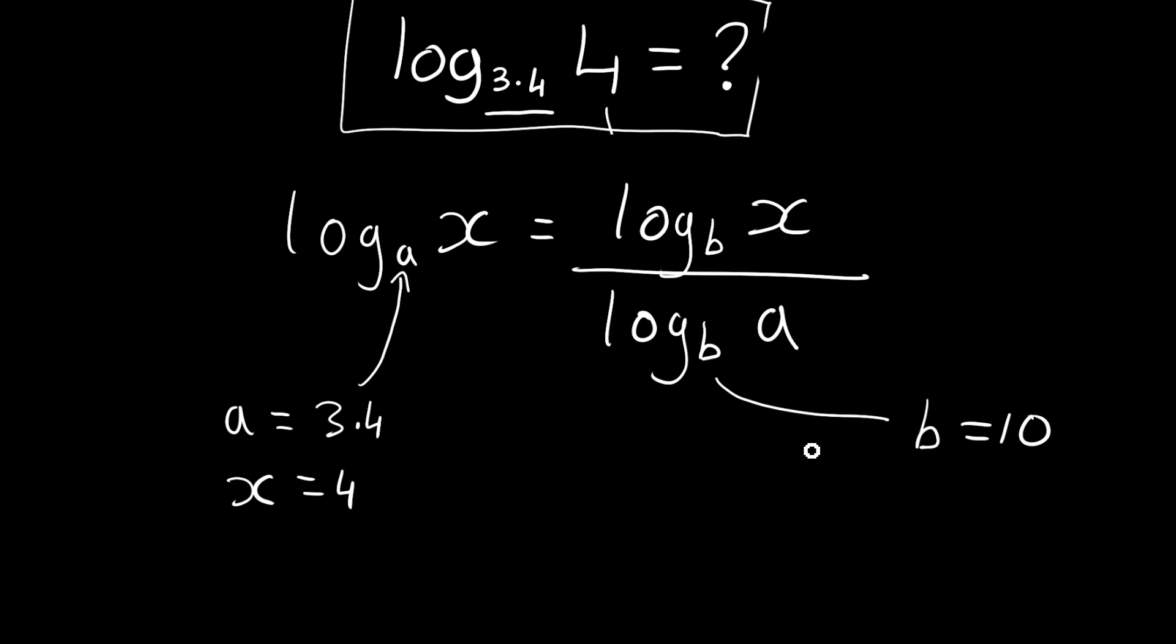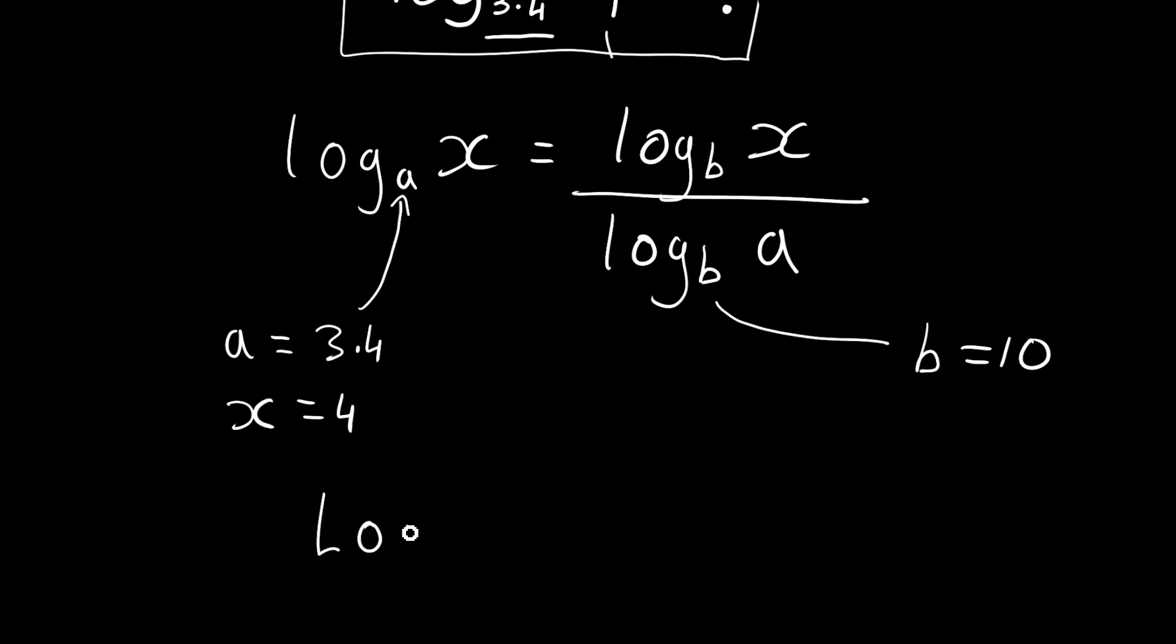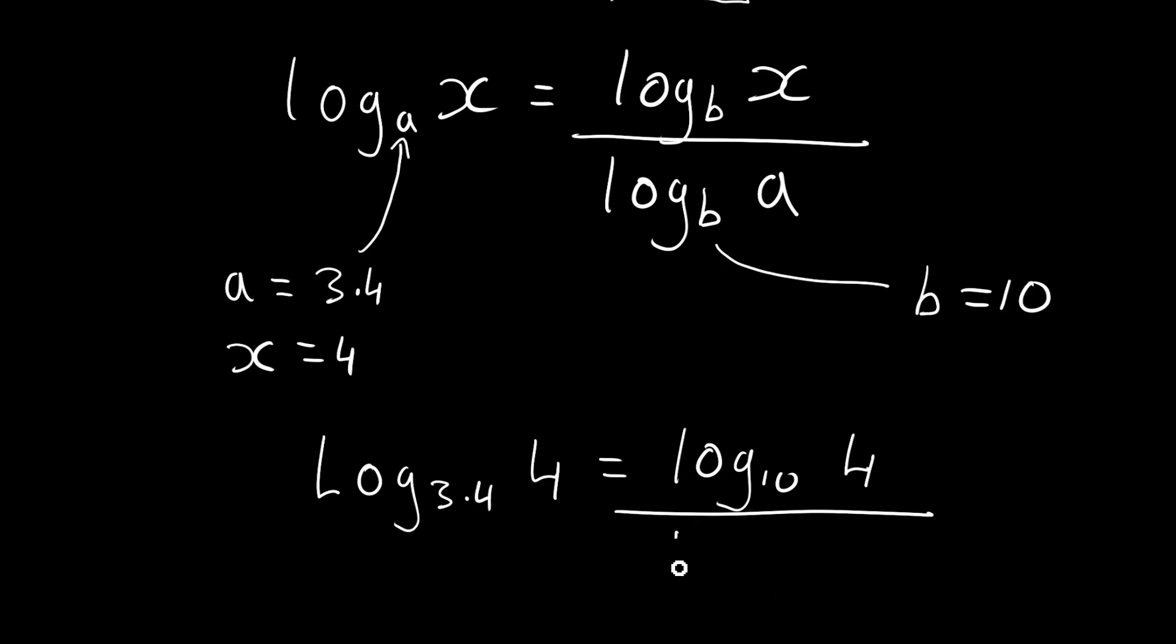So if we substitute these values in to this equation now, we get log 3.4 with an argument of 4 is equal to log 10 with an argument of 4, divided by log 10 with an argument of 3.4.